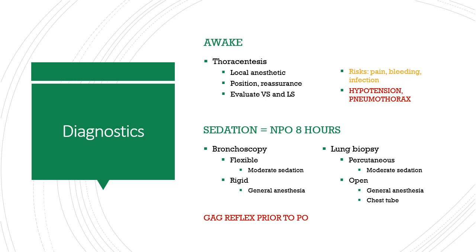Bronchoscopy is using a scope to look at or evaluate the bronchial tract. A flexible bronchoscopy can be done at the bedside with moderate sedation to obtain a biopsy or change out an ET tube. A rigid bronchoscopy is done in the OR under general anesthesia to remove obstructions or large amounts of mucus from the respiratory tract. A lung biopsy can be performed to analyze tissue for infection or malignancy — done at the bedside using moderate sedation with a needle through the skin, usually ultrasound-guided, or under general anesthesia in the OR, which requires a chest tube afterwards to reinflate the lung. Anyone who receives sedation should be NPO for 8 hours ahead of time and should remain NPO until their gag reflex has returned following the procedure.